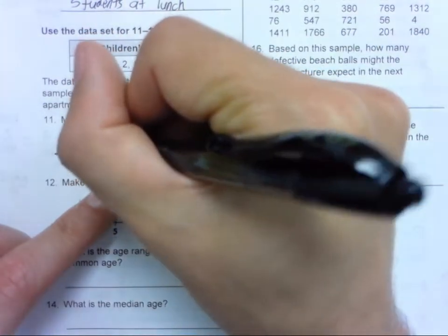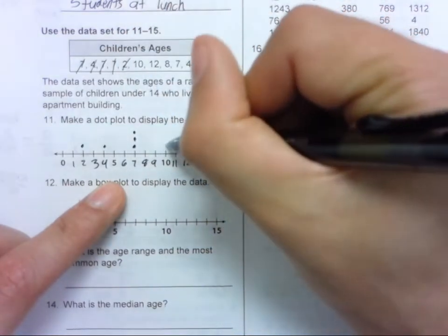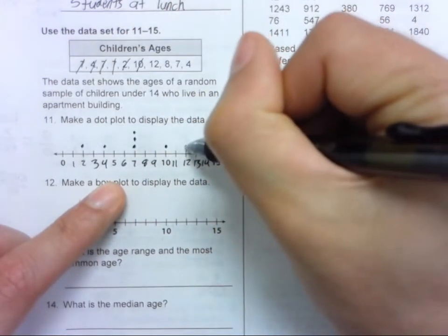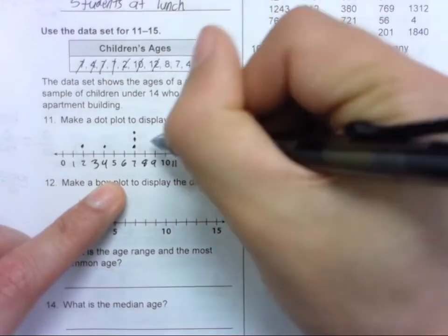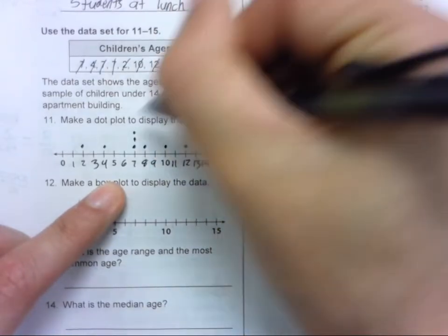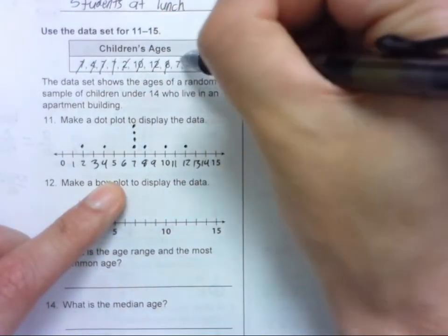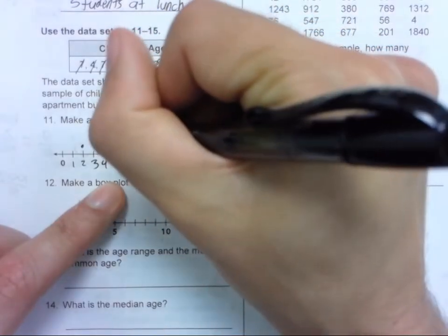Cross it out. 10, cross it out. 12, 8, 7, and 4. So there's our dot plot.